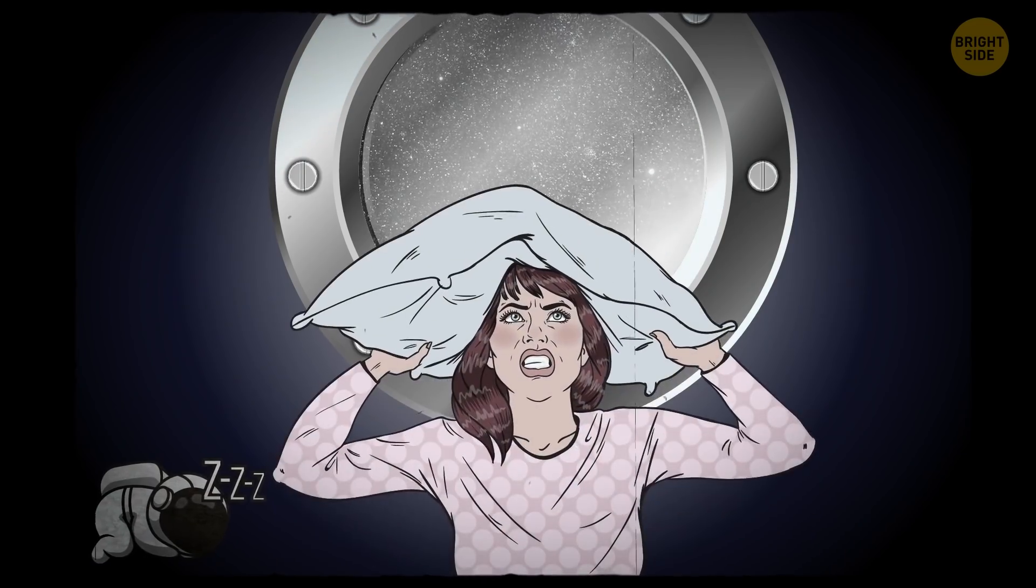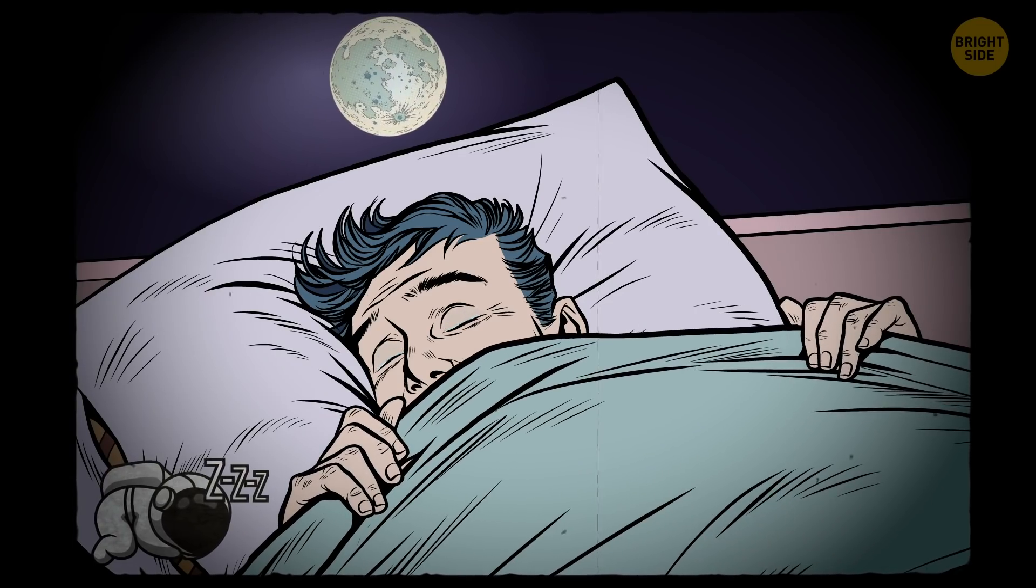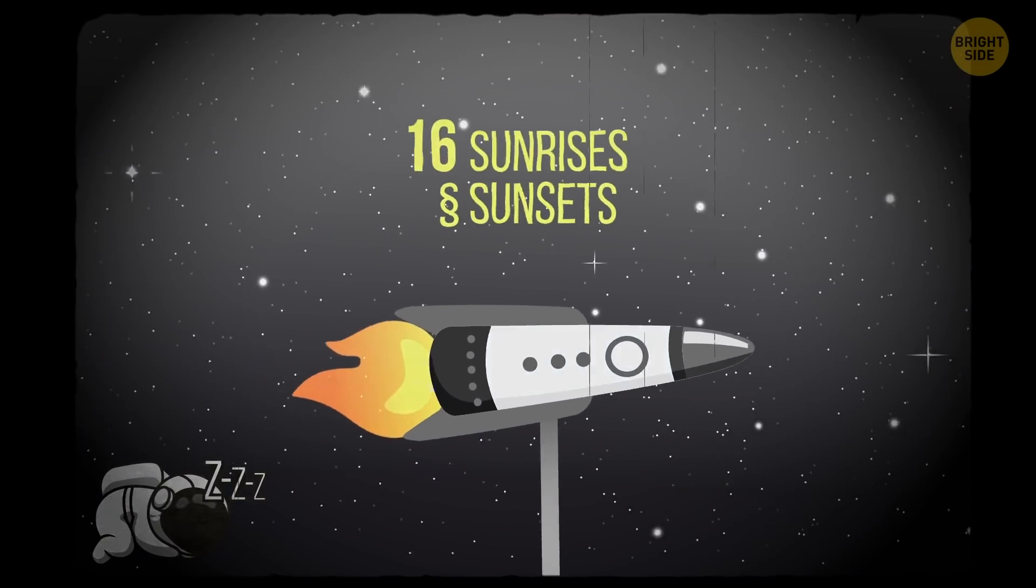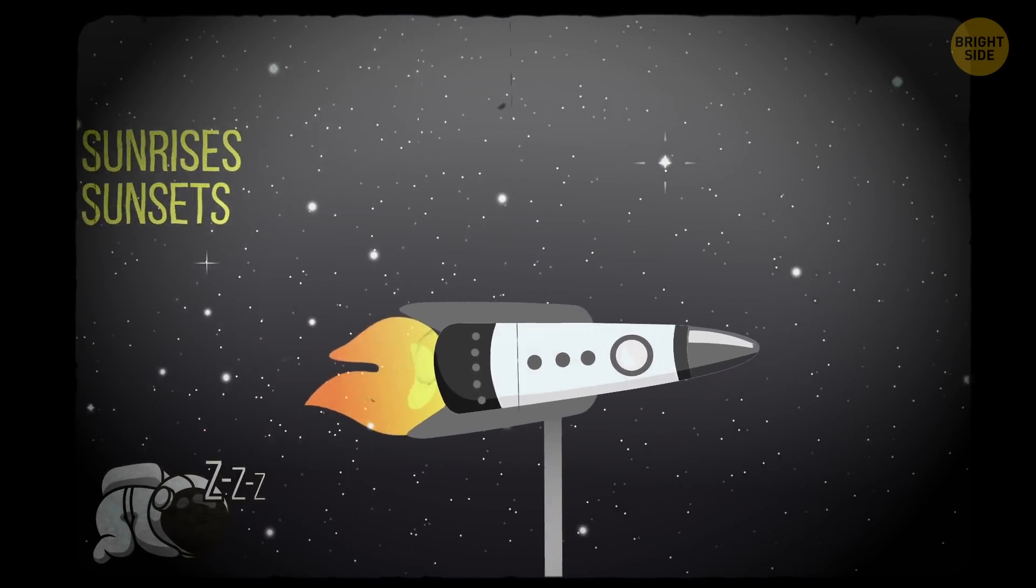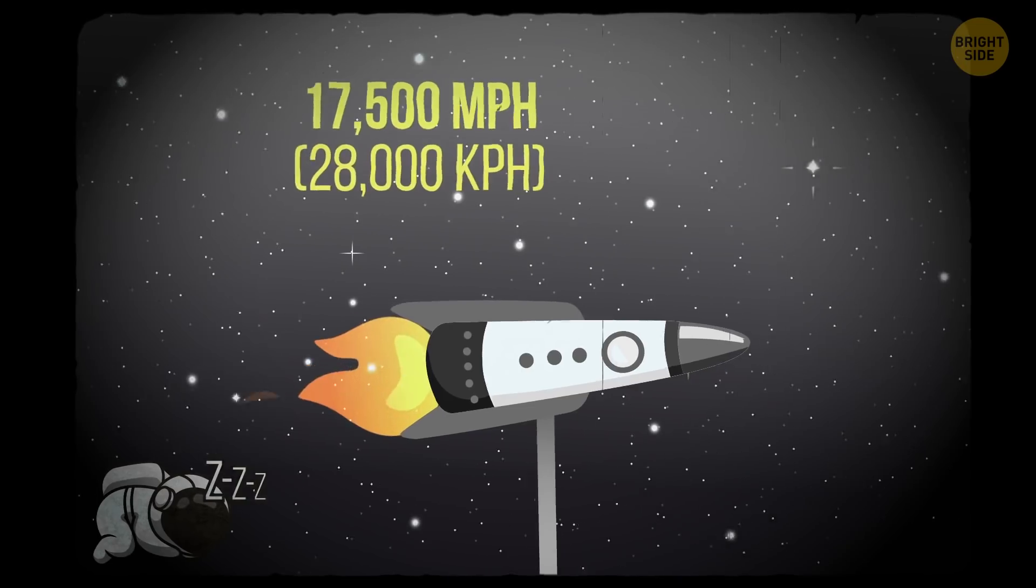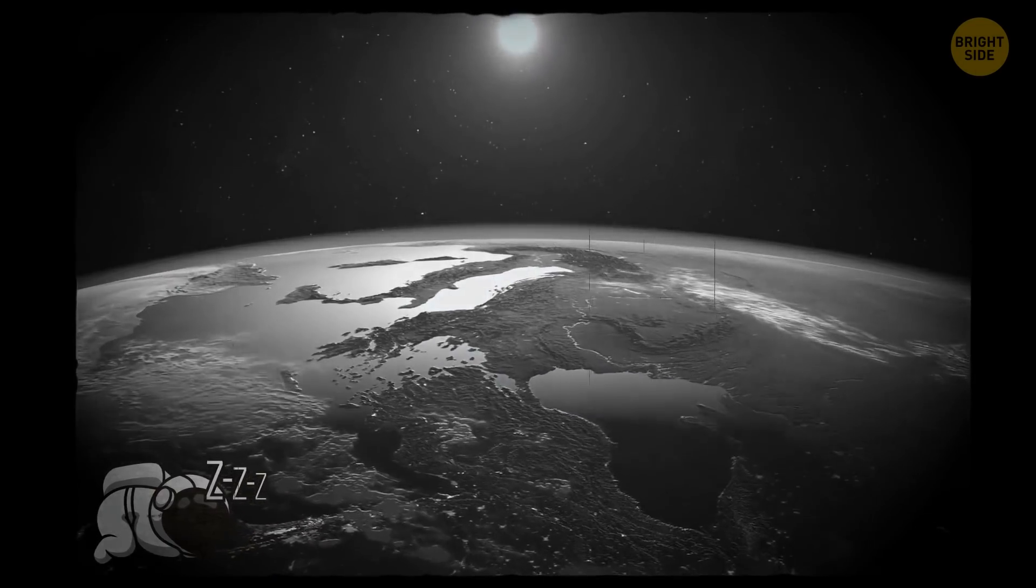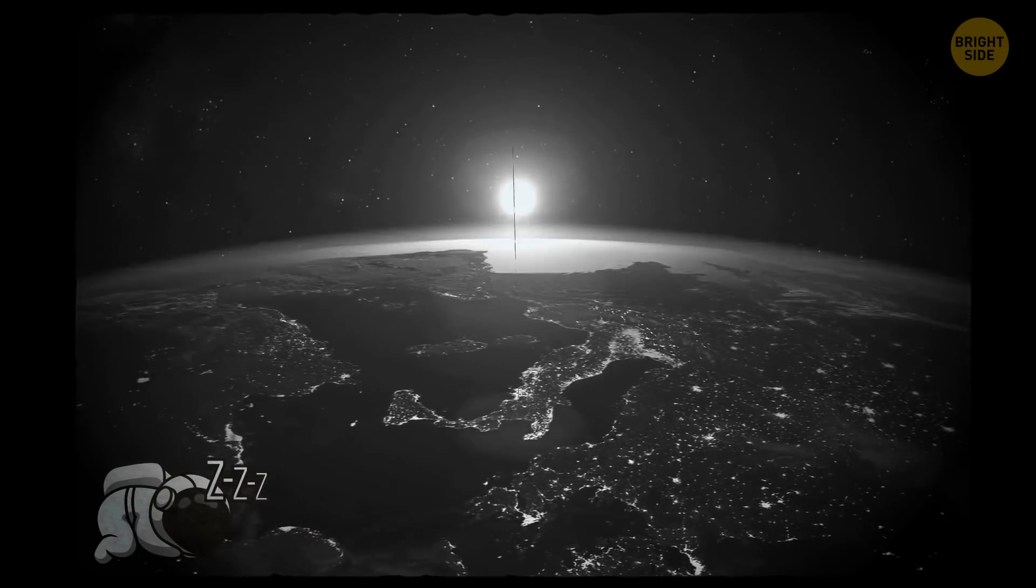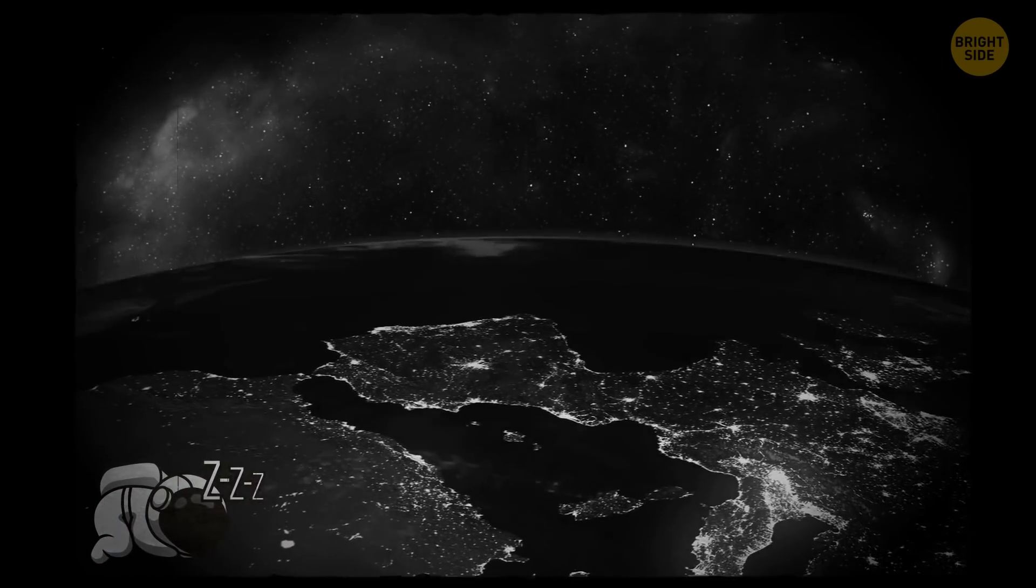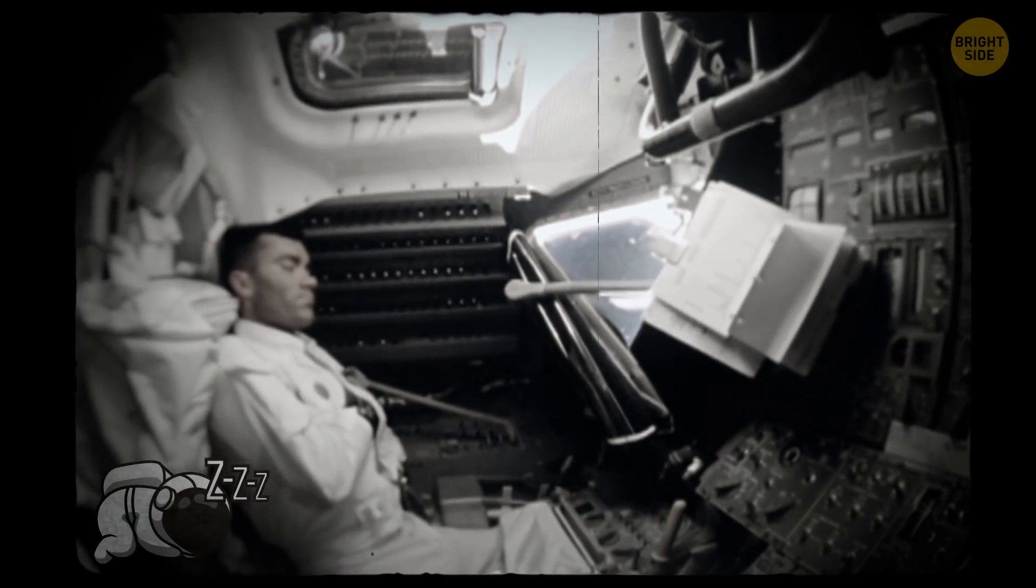Astronauts can't sleep like people do on Earth. A cozy bed and dimness are inaccessible while you're on a spaceship. People in space see 16 sunrises and sunsets a day because their orbital velocity is about 17,500 mph. Each sunrise and sunset lasts a few seconds, so there's not enough time to take a photo, not to mention falling asleep. All this messes up the sleep pattern, so astronauts have to learn how to fall asleep regardless of the sun.